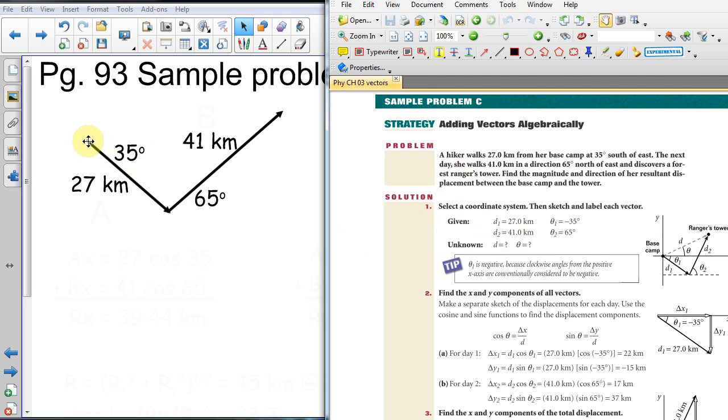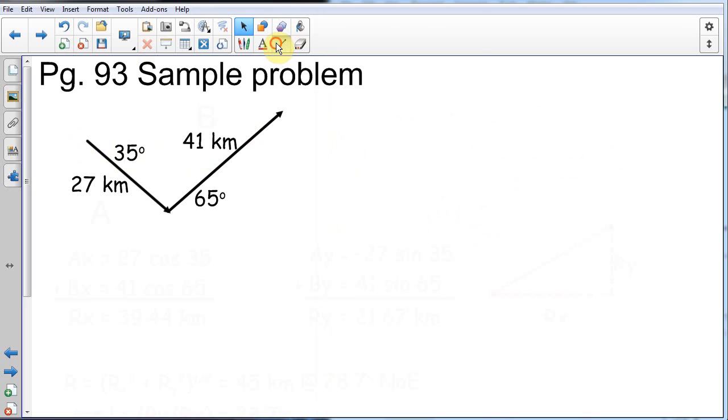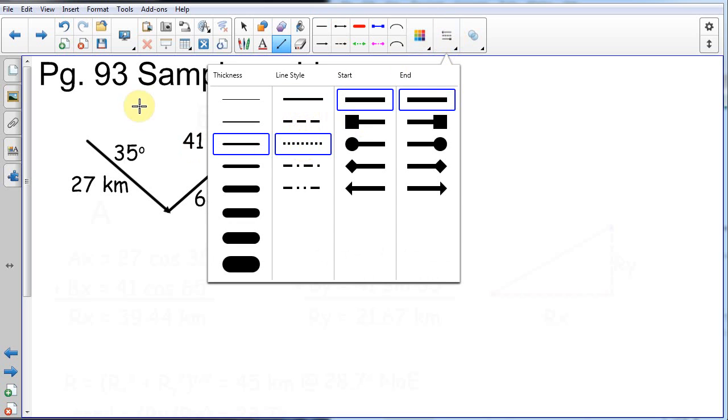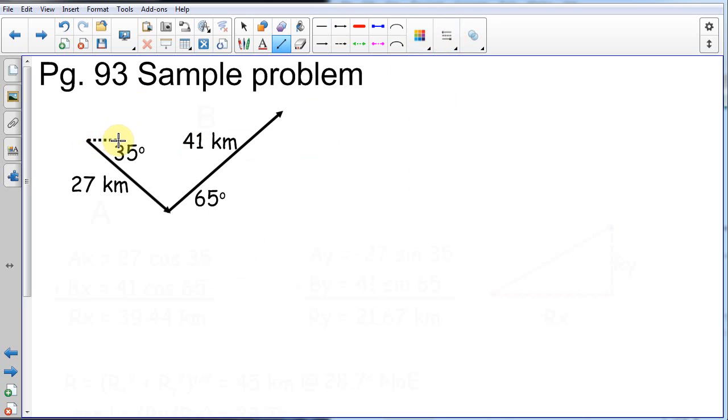So we start with our base camp over here, and it says she walked at 35 degrees south of east. When I think about that, I imagine a little coordinate axis over here at the base camp. And which direction is south of east? Well, south of east is underneath, that's facing east and going south of it. And then the 65 degree angle said she went north of east.